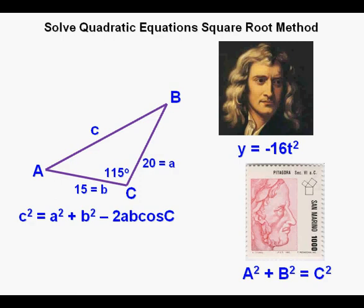Including Newton's d equals negative 16t squared, or to find the missing side of a right triangle using the Pythagorean Theorem and its related equation, the law of cosine c squared equals a squared plus b squared minus 2ab cosine c.